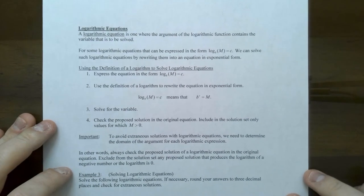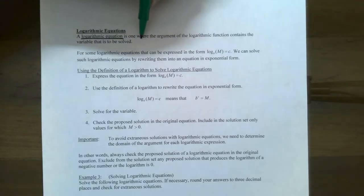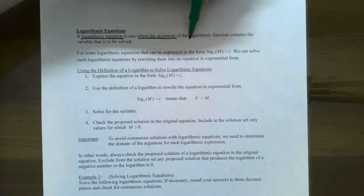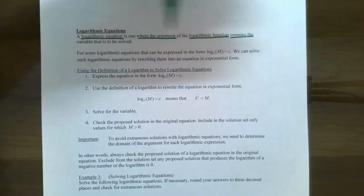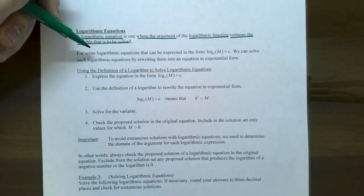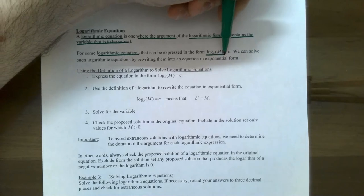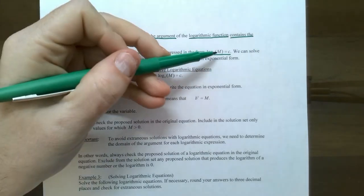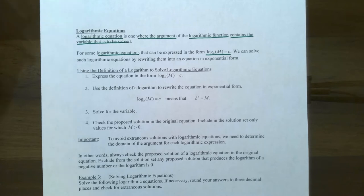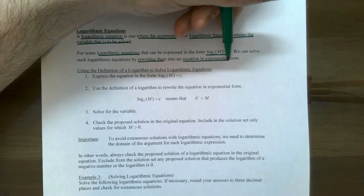For logarithmic equations, logarithmic equations are equations where the argument of a logarithmic function contains the variable that you are trying to solve for. For some logarithmic equations, they might be written in this form: log base b of an expression — where m represents an algebraic expression — and the logarithm is equal to c. You can solve logarithmic equations of this form by rewriting them into an equivalent equation in exponential form.